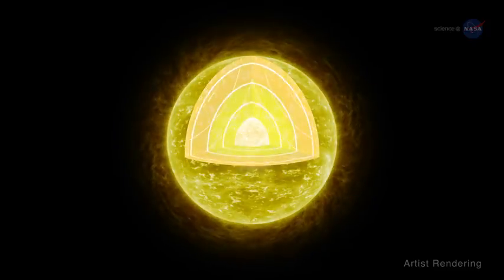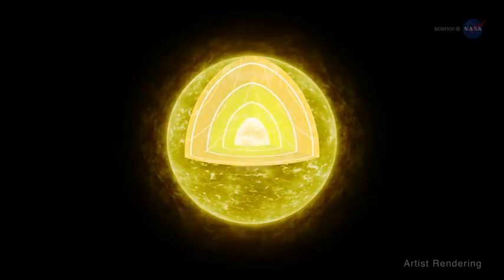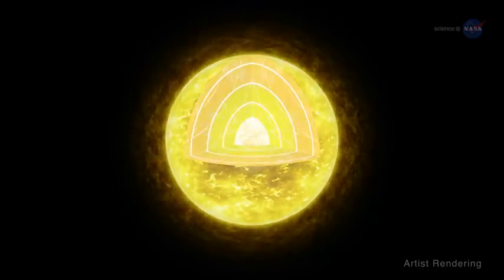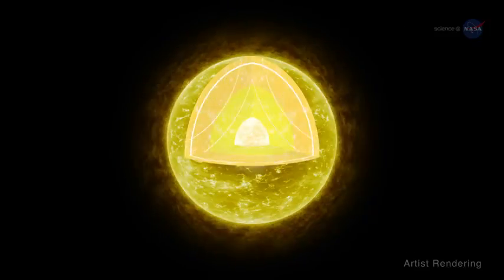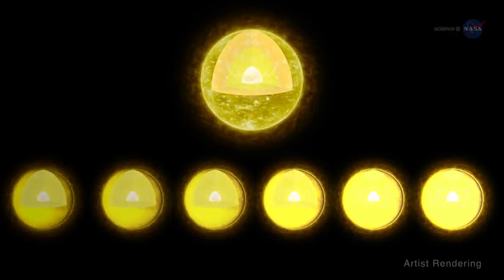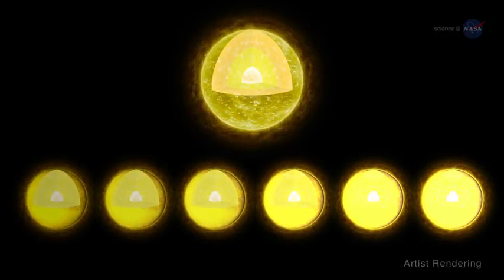Stars are rumbling, noisy spheres of hot gas. Sound waves bounce around the interior and cause the stellar surface to vibrate, much like the head of a drum. These vibrations reveal themselves as fluctuations in a star's brightness.